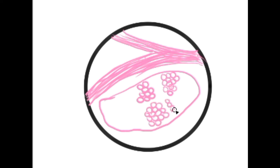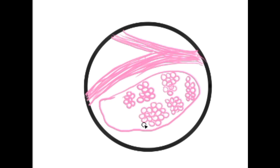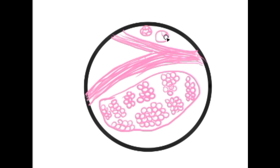The swollen granular cytoplasm of the onchocytes is due to excessive accumulation of mitochondria. These granules can be identified on light microscopic examination with phosphotungstic acid hematoxylin stain.